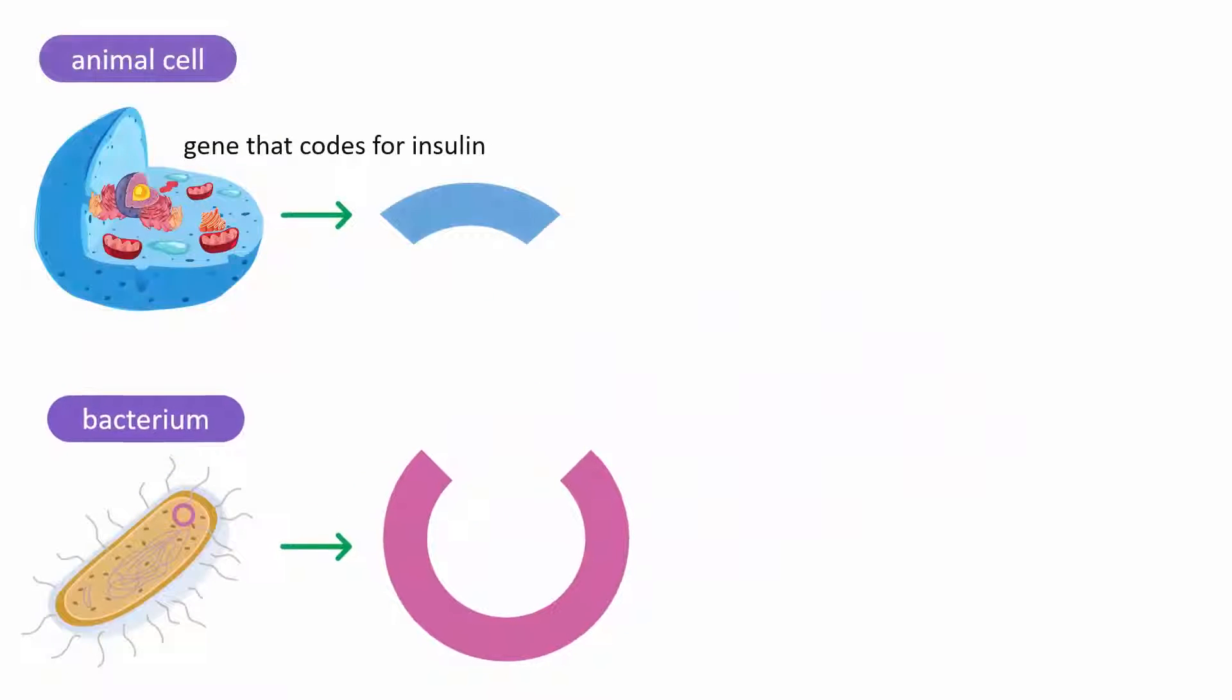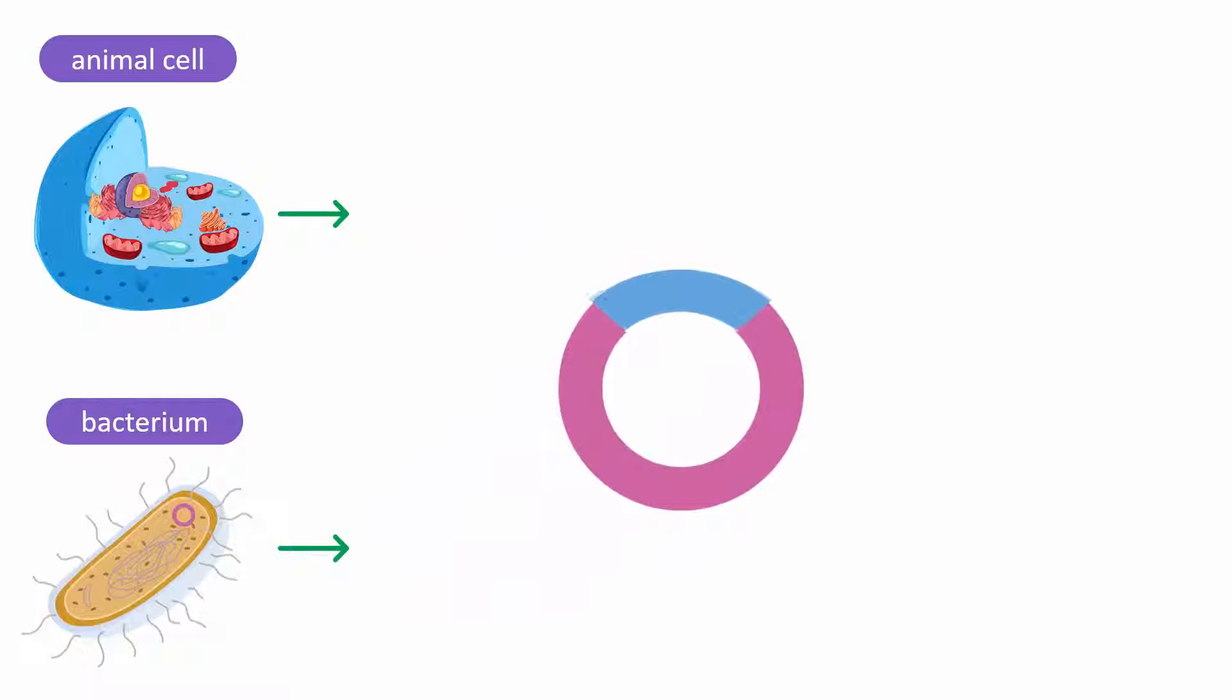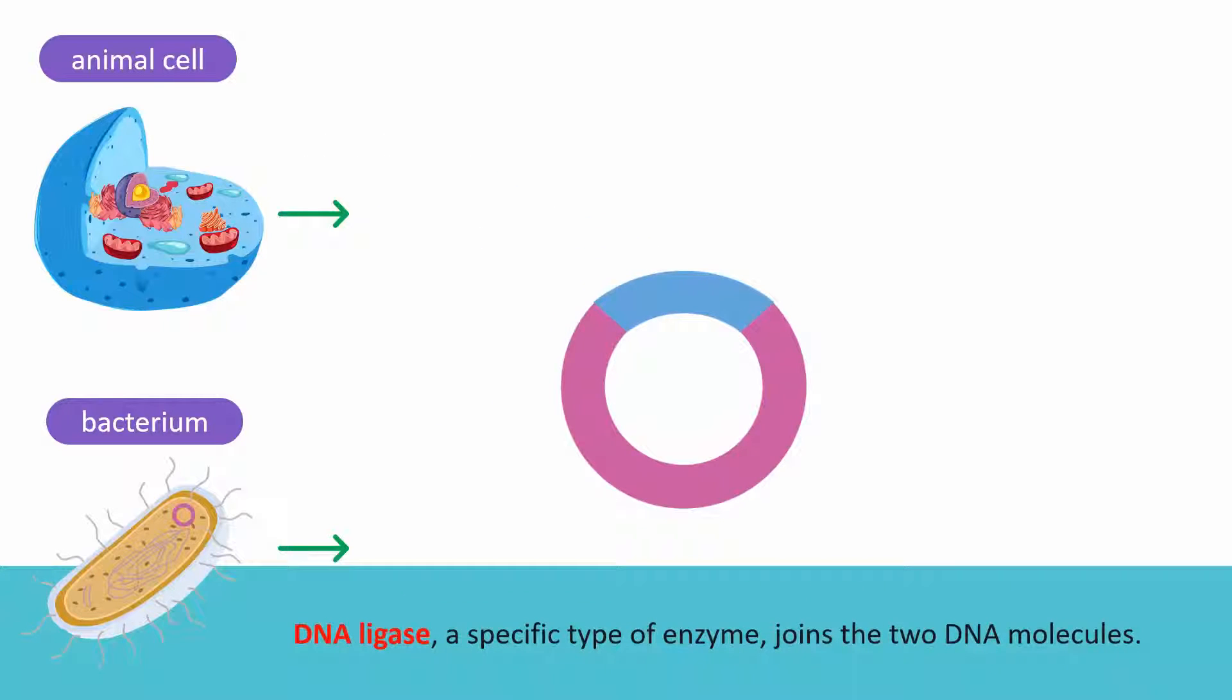The gene that codes for insulin from human DNA is isolated and inserted into the gap in the plasmid. DNA ligase, a specific type of enzyme, joins these two DNA molecules. The resulting structure is called recombinant DNA.